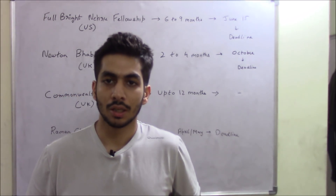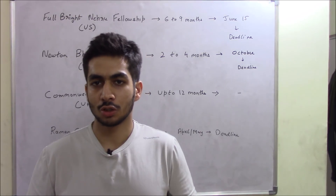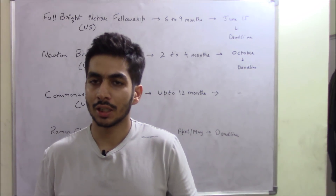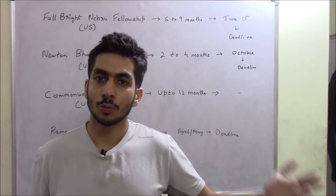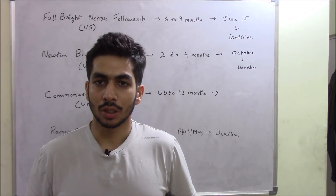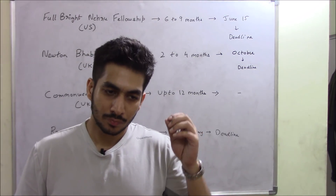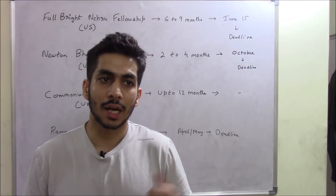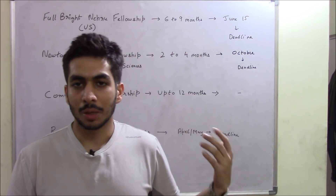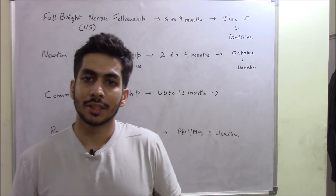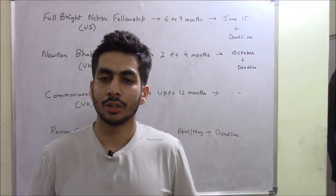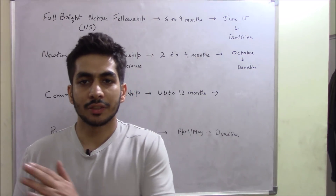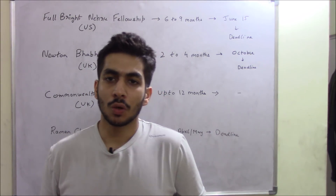Don't confuse split PhD with joint PhD programs — they are two different things. In a joint PhD program, two universities give you a PhD. For example, if you're in an Indian university and do part of your PhD in a foreign university, both universities award you the degree. But split PhD is different: if you're registered at IIT or IISER and go abroad for five or six months to do research, the degree will be given only by IIT or IISER, not by the foreign university.